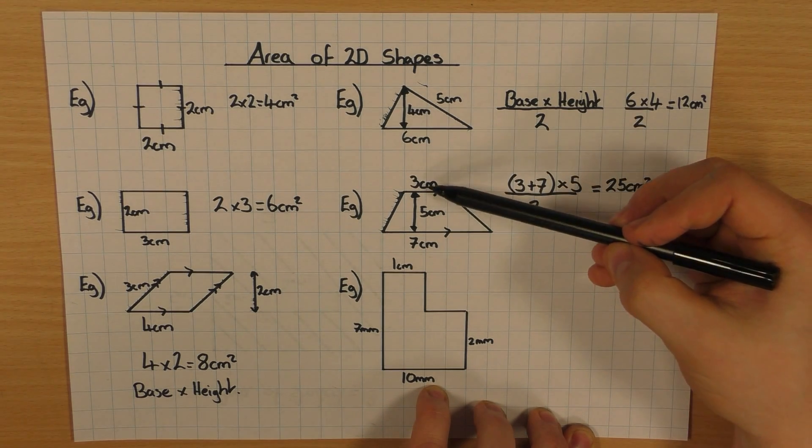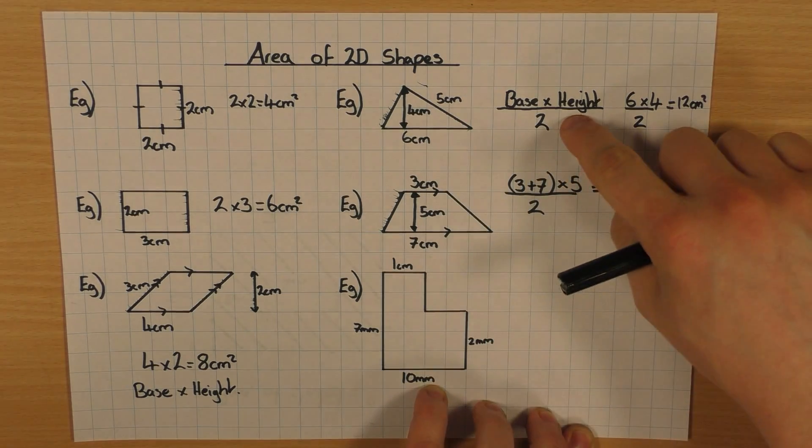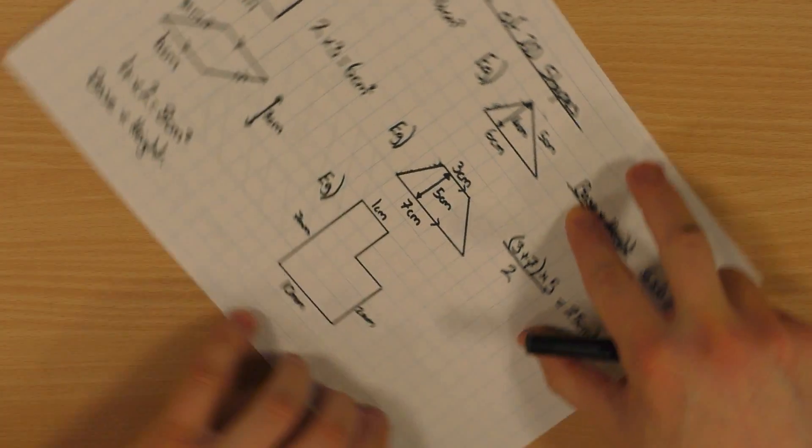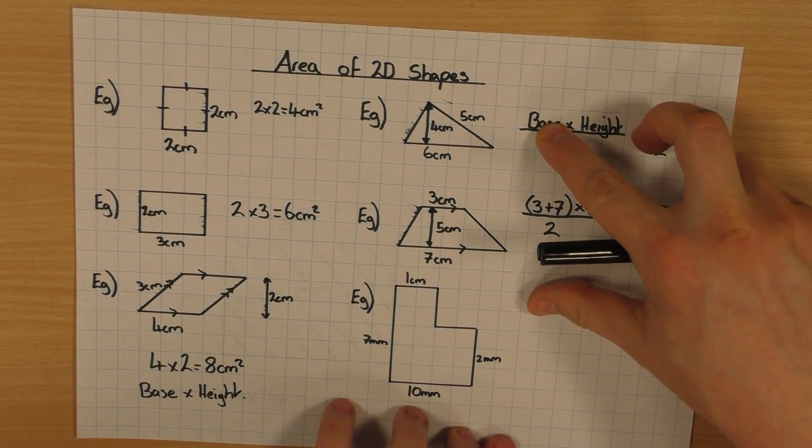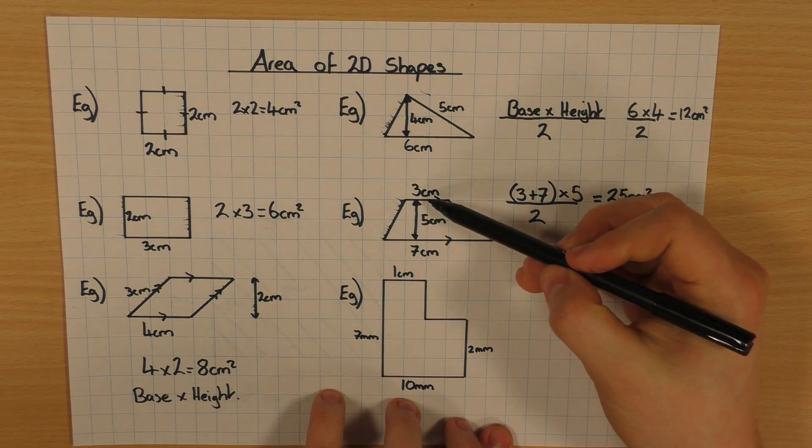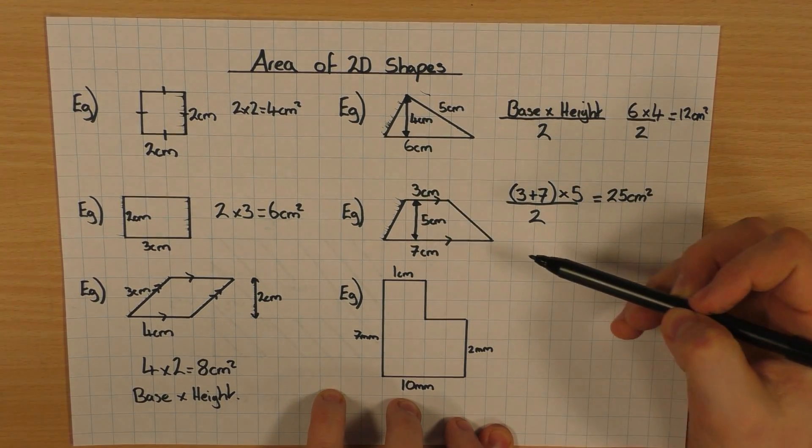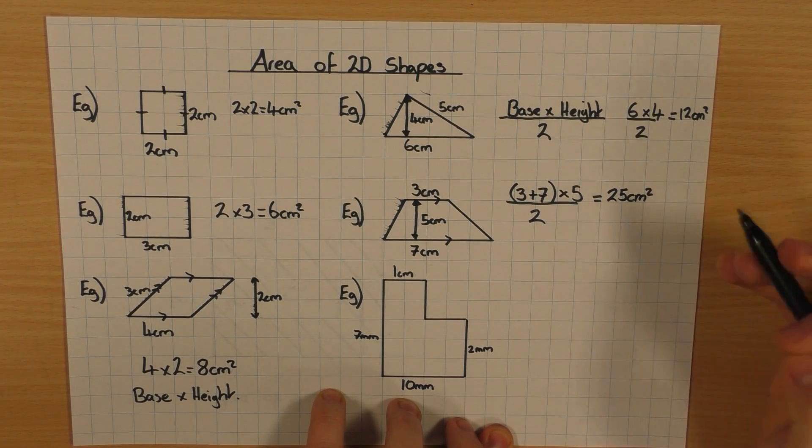So with a trapezium, add the parallel sides, even if it's turned around on its side like that, or something like that. Don't get confused. It's always add the two parallel sides. Times it by the height, then half it.